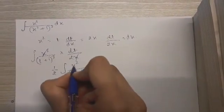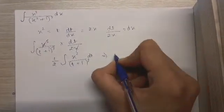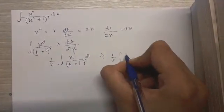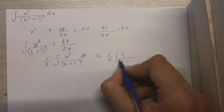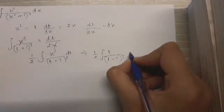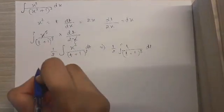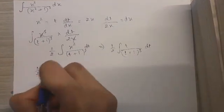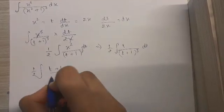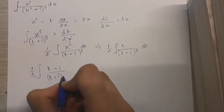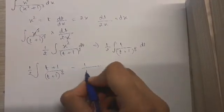Now here we can replace x squared as t, so this becomes one-half times the integral of t upon t plus one, the whole cube, dt. What I'm going to do is add and subtract one in the numerator, so I have t plus one upon t plus one the whole cube, minus one upon t plus one the whole cube.